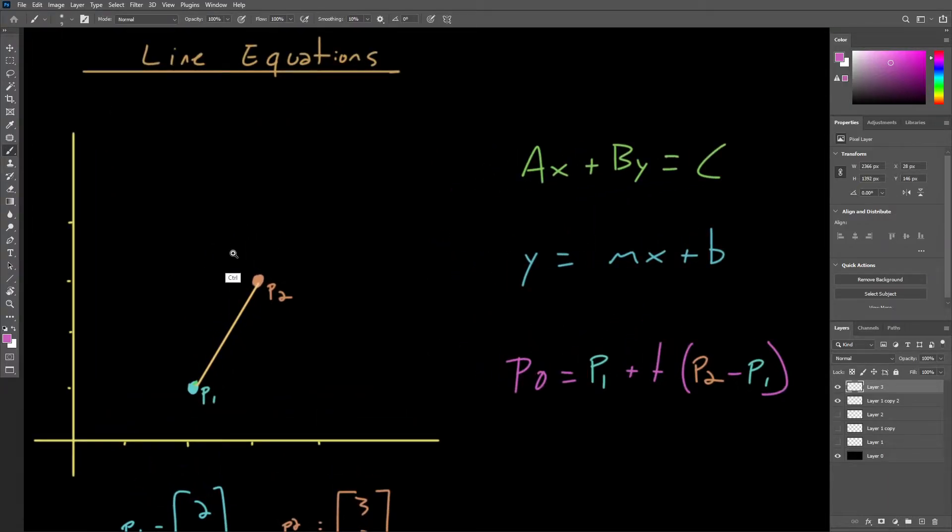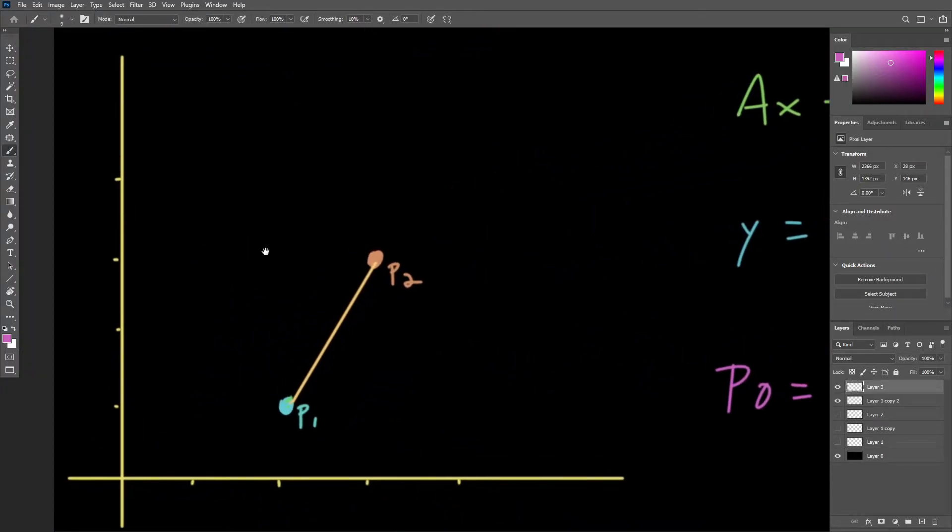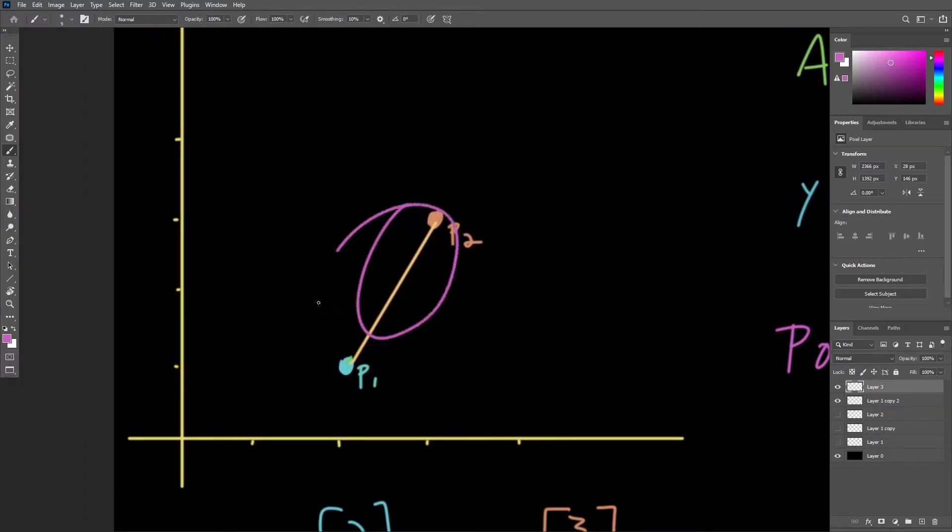Now, expanding on this idea, we can consider a situation where we have a line as well as an arbitrary point in space. And what we want to do is determine the shortest distance between the point and the line. The shortest distance will be basically the vector from the line to the point where this vector forms a 90 degree angle.